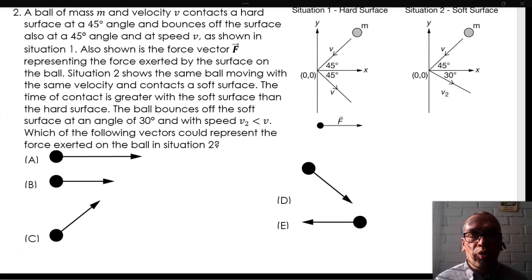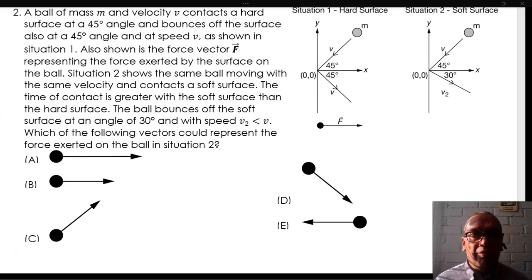Situation 2 shows the same ball moving with the same velocity and contacts a soft surface. The time of contact is greater with the soft surface than the hard surface. The ball bounces off the soft surface at an angle of 30 degrees and with speed v2, which is less than v.